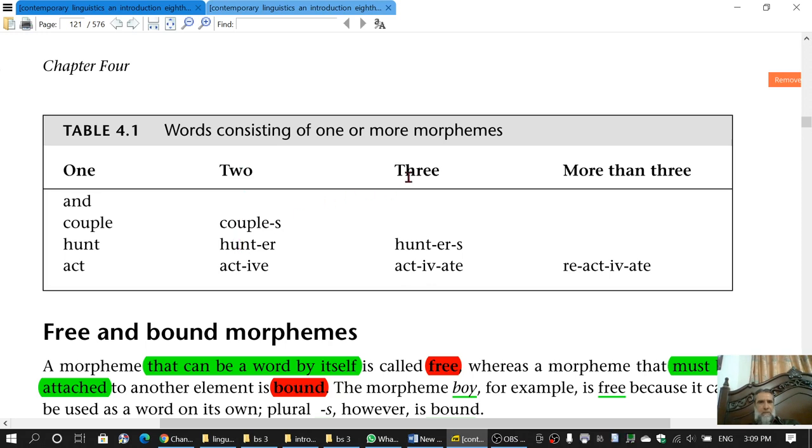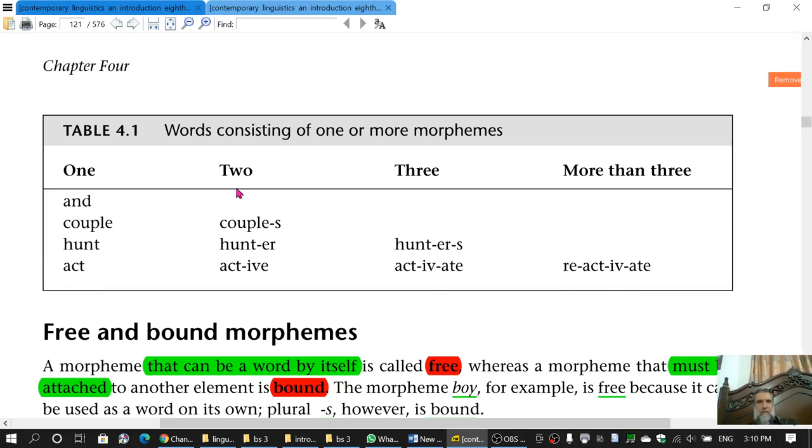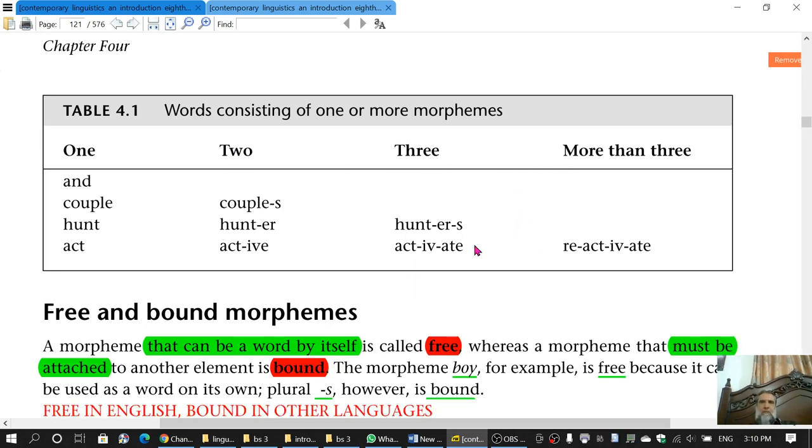The complex morphemes having three morphemes are hunters and activate. And the complex morpheme having more than three morphemes is reactivate, which is RE as one morpheme, act as another, IV is yet another, and ATE is the final one. So you can see these two having two, three, and more than them. These are called complex words.